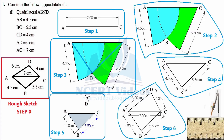If you observe AC, there is a jump from A to C, ignoring B. Similarly, CA cannot be reached directly — there is a missing in-between vertex. This means AC is a diagonal, because diagonals always connect opposite vertices. Since AC is not a continuous vertex pair, it is not a side but a diagonal.